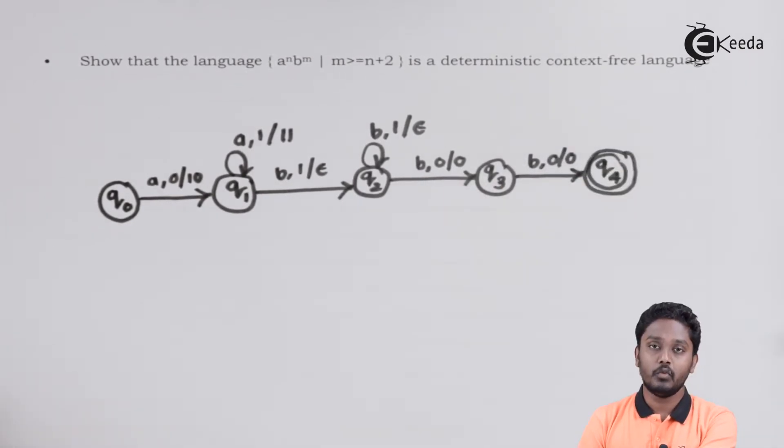I declare Q4 as a final state, because whenever a string reaches state Q4, it will be already considered to be having equal number of A's and B's, followed by at least 2 more extra B's.